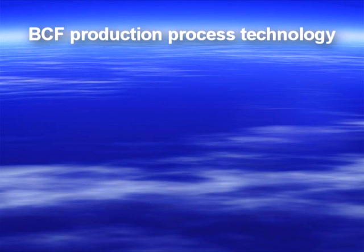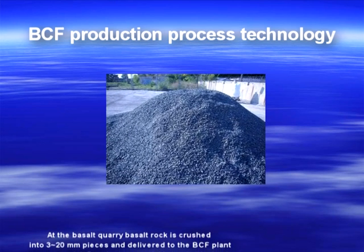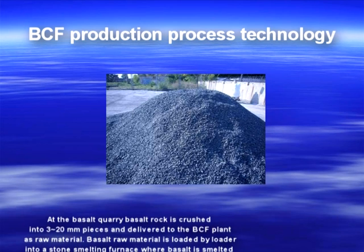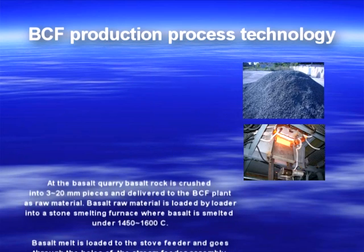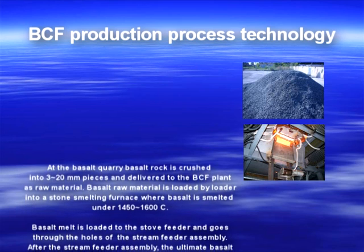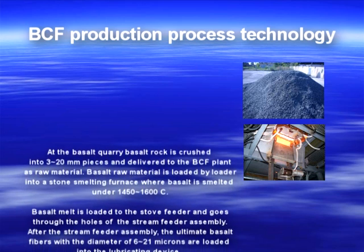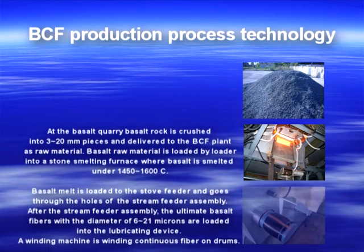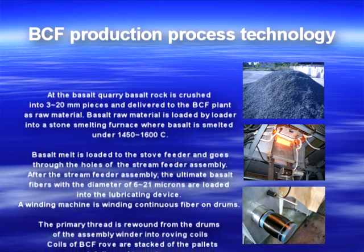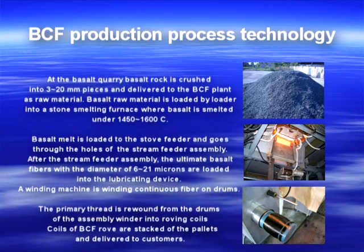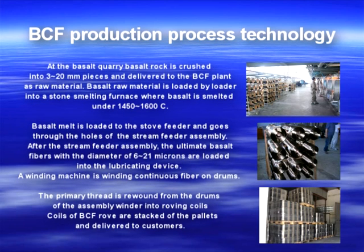BCF production process technology: At the basalt quarry, basalt rock is crushed into 3–20 mm pieces and delivered to the BCF plant. The raw material is loaded into a stone-smelting furnace where basalt is smelted at 1450–1600°C. The basalt melt goes through the stream feeder assembly, producing fibers of 6–21 microns diameter, which are wound on drums, rewound into roving coils, and delivered to customers.